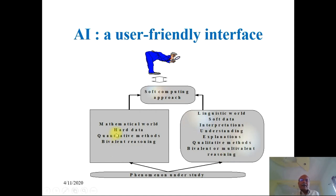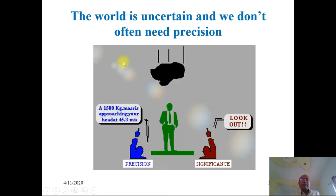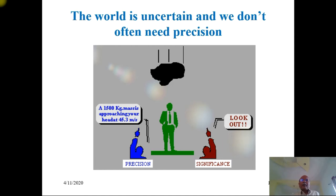These two categories are covered under the umbrella of the soft computing approach, which is a subset of artificial intelligence. The world is uncertain and we don't often need precision. For example, while driving a car, you need not know the working principles of the carburetor, engine, and so on in order to learn how to drive. That level of precision is not required.